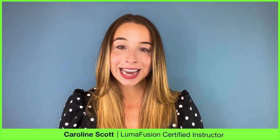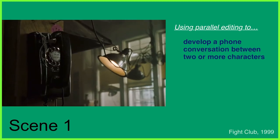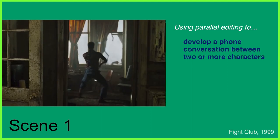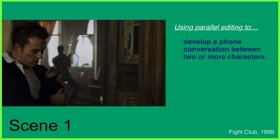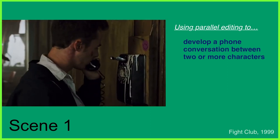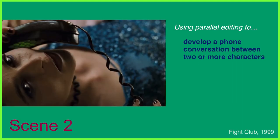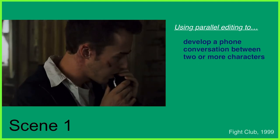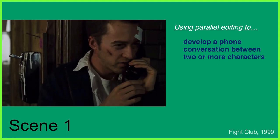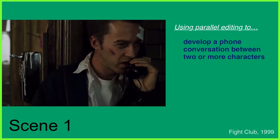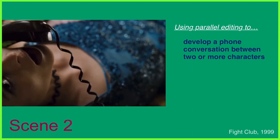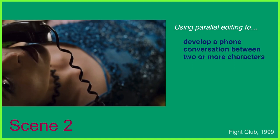Parallel editing refers to the technique of alternating multiple scenes that happen at the same time but in different locations. A classic example is the on-screen phone call where we have two characters chatting to each other in different locations. Although the scenes would have been shot separately, they've been cut together in the edit in a way that portrays them happening simultaneously, allowing the viewer to watch the two characters have a conversation in what looks like real time.